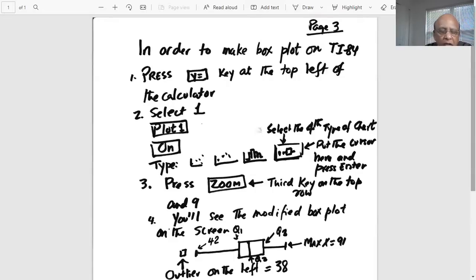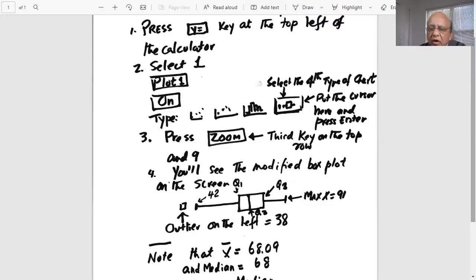It should be on, and in the second line, which is type, select the fourth type of chart, which is a modified box plot. Now press zoom and then 9, and you get a modified box plot on your screen, which shows an outlier with the square box on the left, which is the number 38, which is below the lower outlier boundary. There is no outlier on the right, so this is your modified box plot.